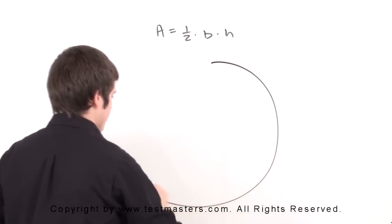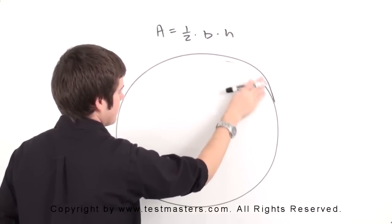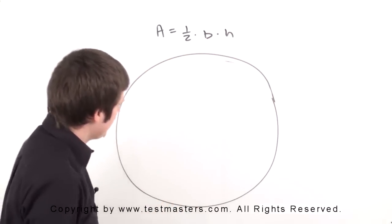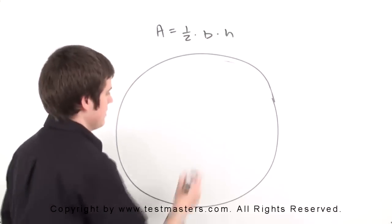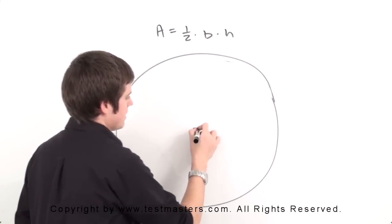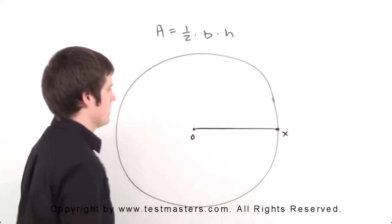Take a look at number 5. In this figure above, OX is the center. We have OX, it's going to be the radius of the circle. So we have OX when O is in the center.